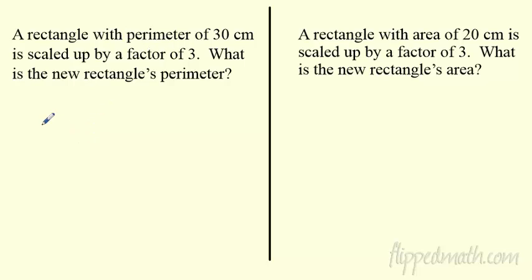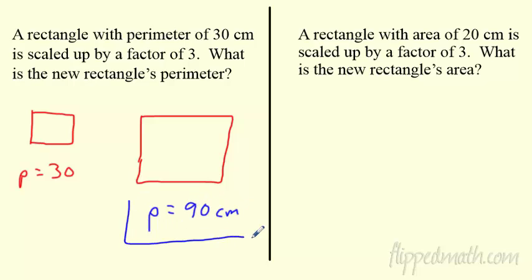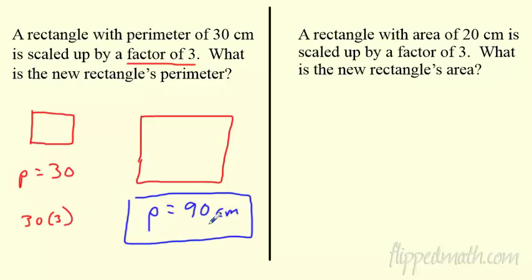Let's do a couple examples. If a rectangle has a perimeter of 30 and I scale it up by a factor of three, what's the new perimeter? The new perimeter will also be three times bigger. Thirty times three equals 90. That is the new perimeter. Just like the sides get three times bigger, the perimeter gets three times bigger.